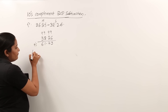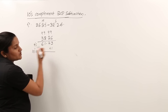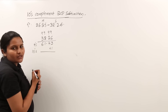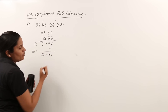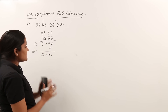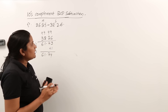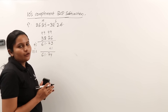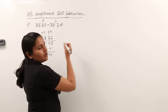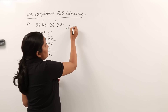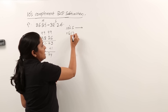We want ten's complement, and ten's complement means we add 1 to the nine's complement. So adding 1 to 61.73 gives us 61.74. So 61.74 is the ten's complement of our subtrahend 38.26. This completes our first step.